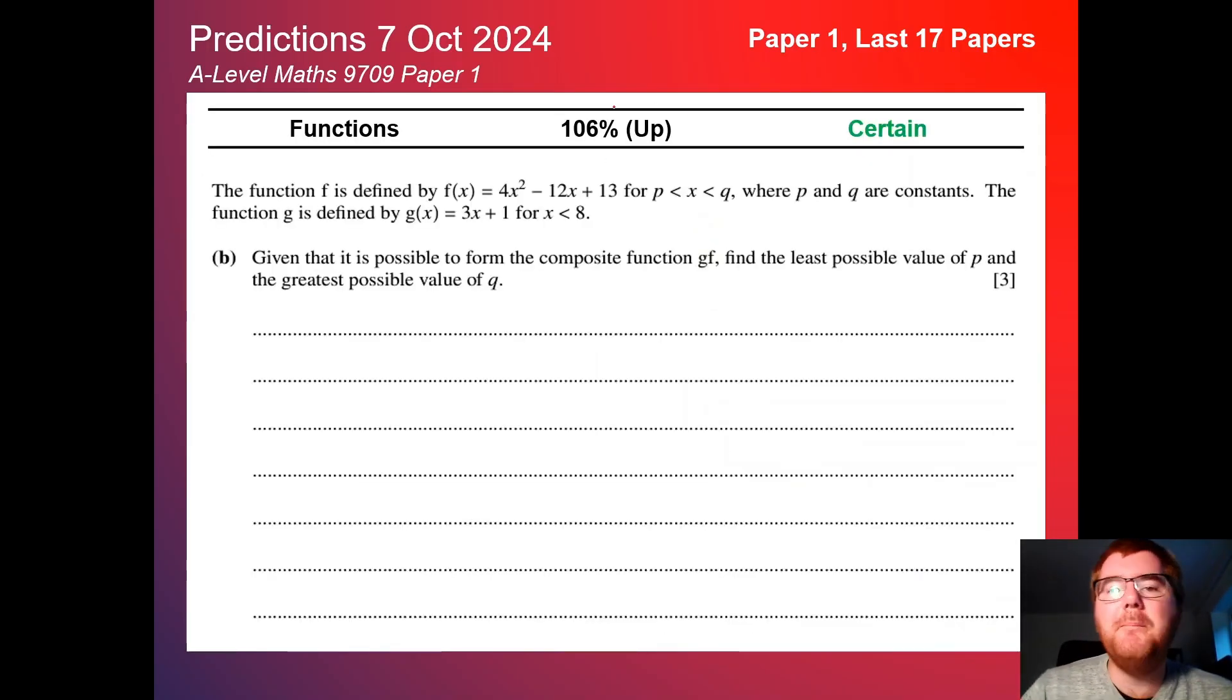We have functions up here at 106%, so pretty much certain to appear in some way. The questions can really be different - sometimes composite functions working with inverse functions, talk about when a function is defined or not. This is a little twist on that kind of function question, because you're looking for the least possible value of P and the greatest possible value of Q.